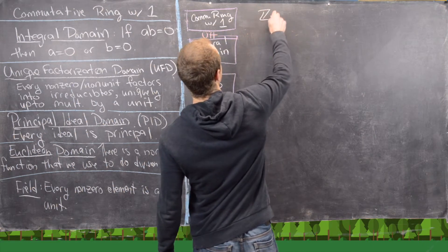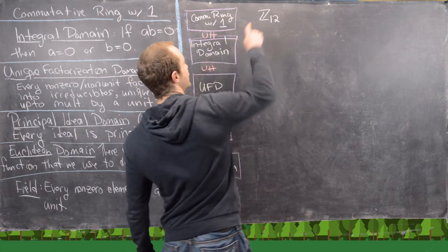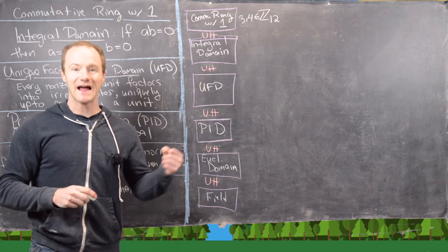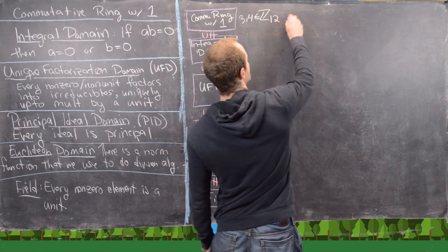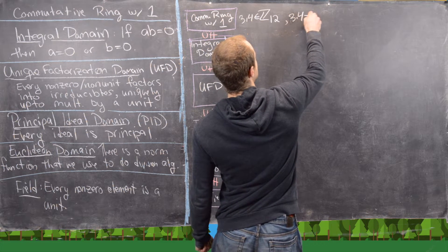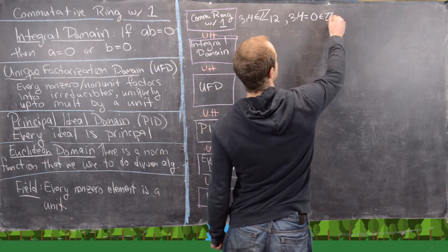Next to this I'm going to put a commutative ring with one that is not an integral domain. And just as an example we'll use Z12. So notice if we take 3 and 4 in Z12, neither of those are equal to 0, but 3 times 4 is equal to 12 which is 0 within Z12.